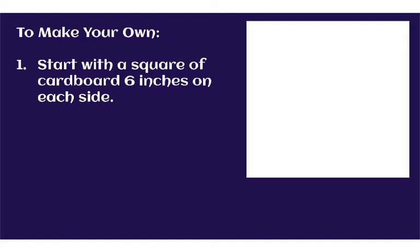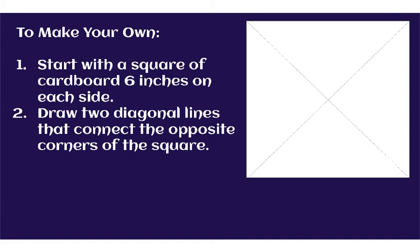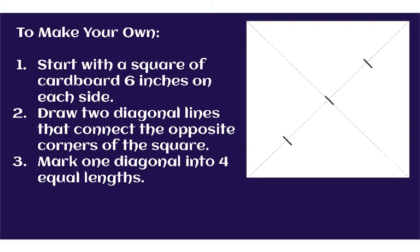To make your own, you'll start with a square of cardboard, six inches on each side. You could use paper too. It just might hold up a little better if it's cardboard. Next, you're going to draw two diagonal lines that connect the opposite corners of the square. So you're going to draw this line and this line.